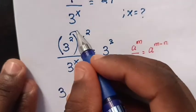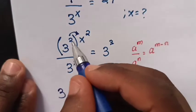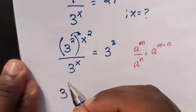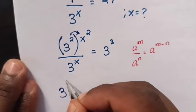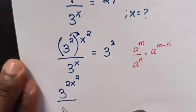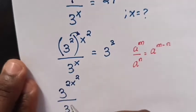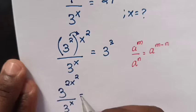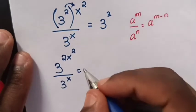we multiply the powers, 2 times x square to get 2x square over 3 power x equals 3 power 3.